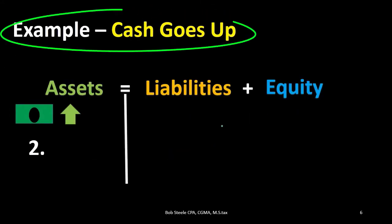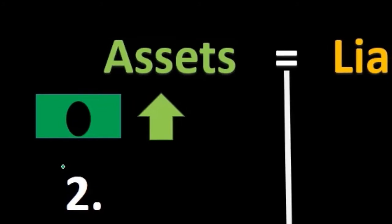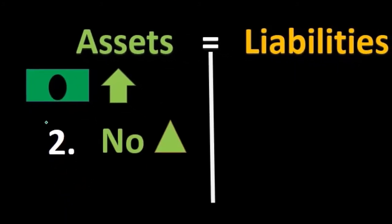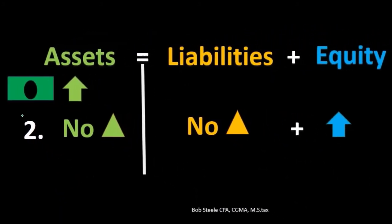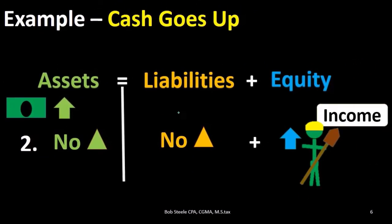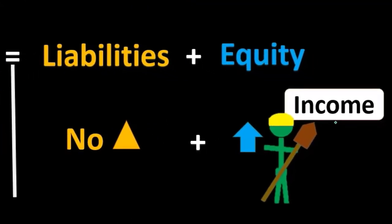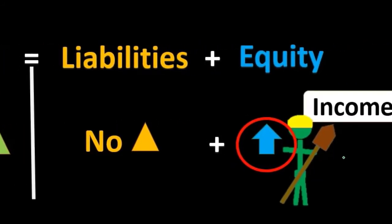Another example: again starting with cash increasing, what else could happen? If it were the equity side, equity could be increasing because income goes up. Receiving income is probably the most common form of equity increasing. Therefore, assets would go up and equity would go up.